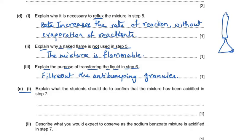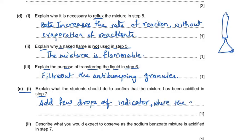Question 1e1 asks what students should do to confirm the mixture had been acidified in step 7. Since we are identifying the presence of acid, we should add a few drops of an indicator, which will show a colour change to confirm the mixture is acidic.